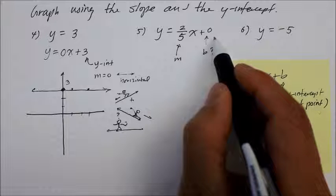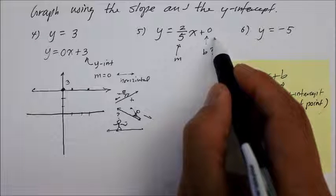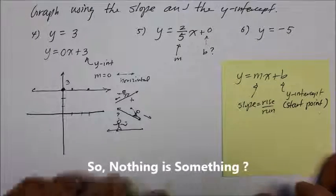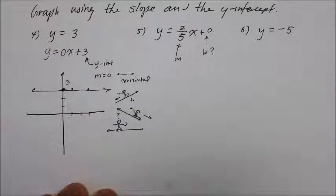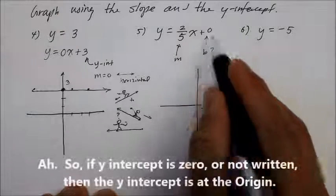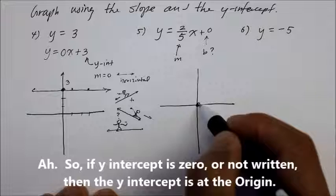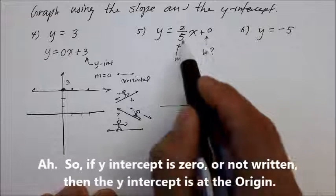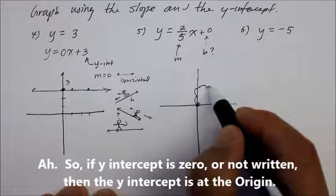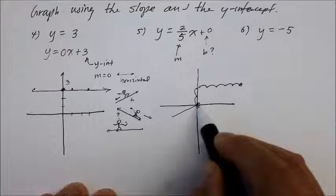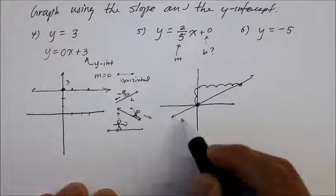Remember, in mathematics, when something's not there, there is something. So what's the starting point for this particular equation? You start at the origin, because it's 0. And from there, the rise is 2, 1, 2, and run is positive 5: 1, 2, 3, 4, 5, bam! Draw a line, and you have a positive slope going up from left to right.